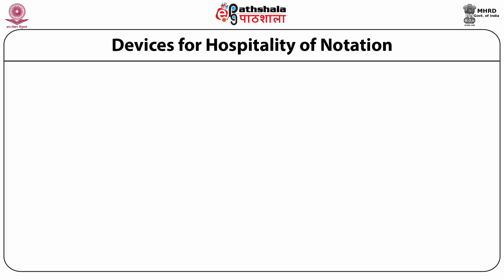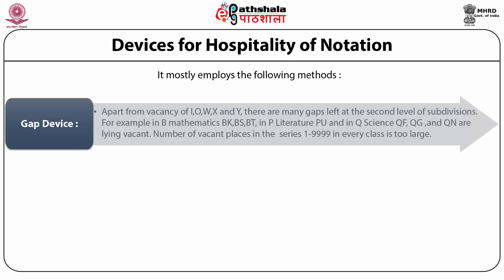Devices for hospitality of notation: The scheme is quite hospitable to new subjects. It mostly implies the following methods for hospitality. First is the gap device. Apart from vacancy of the letters I, O, W, X and Y, there are many gaps left at the second level of subdivisions. For example, in B Mathematics — BK, BS, BT; in P Literature — PGU; in Q Sciences — QF, QG, and QN are still lying vacant. The number of vacant places in the series 1 to 10,000 in every class is too large.